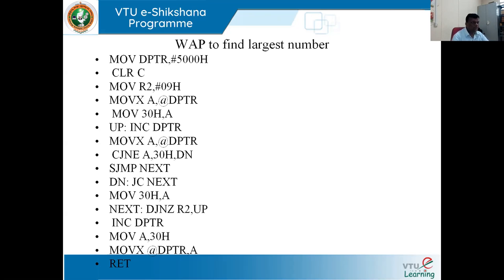MOVX A, @DPTR copies the first data at address 5000H into accumulator A. MOV 30H, A copies A into memory location 30H. INC DPTR advances DPTR to 5001H. MOVX A, @DPTR loads the second data into A. Now we have two values: the second data in A and the first data in 30H. The logic is: take two numbers, compare them, determine which is larger, then compare the winner with the next number.